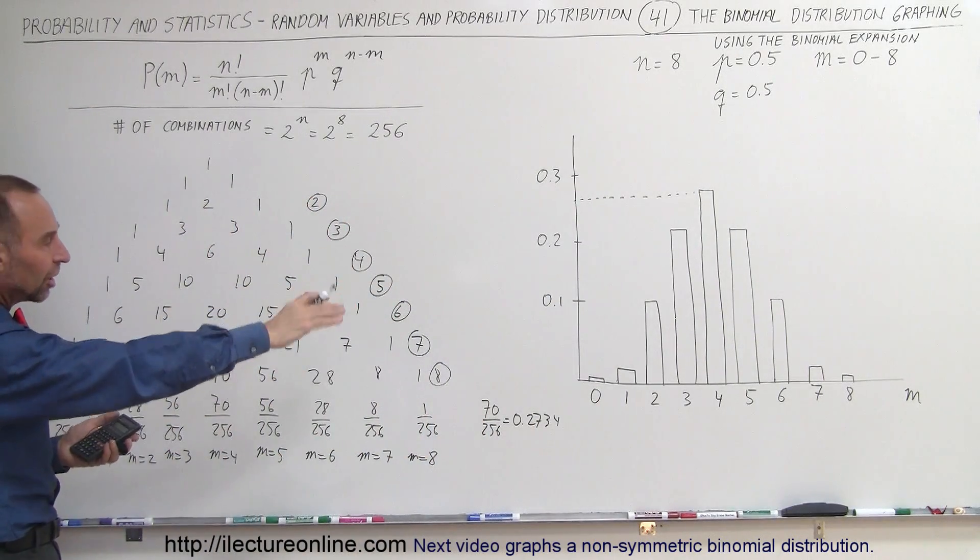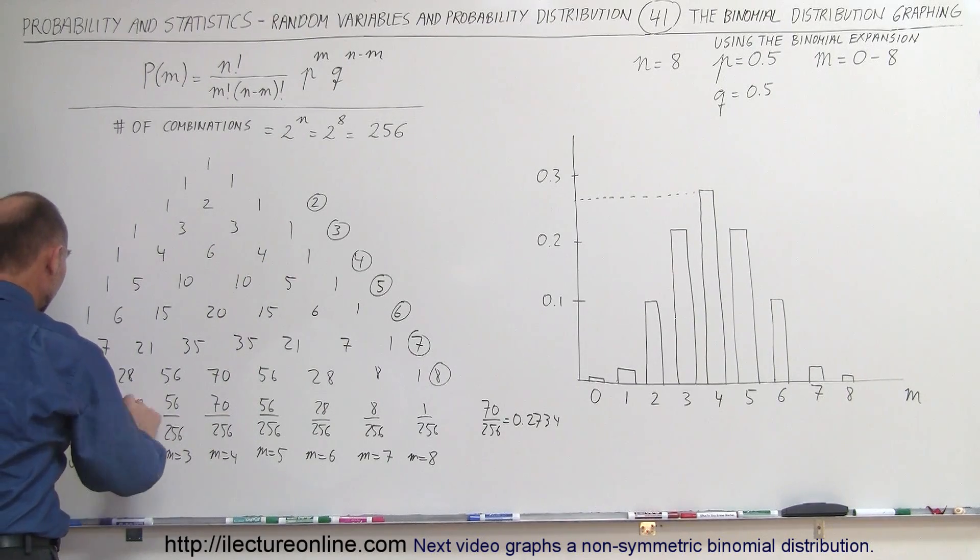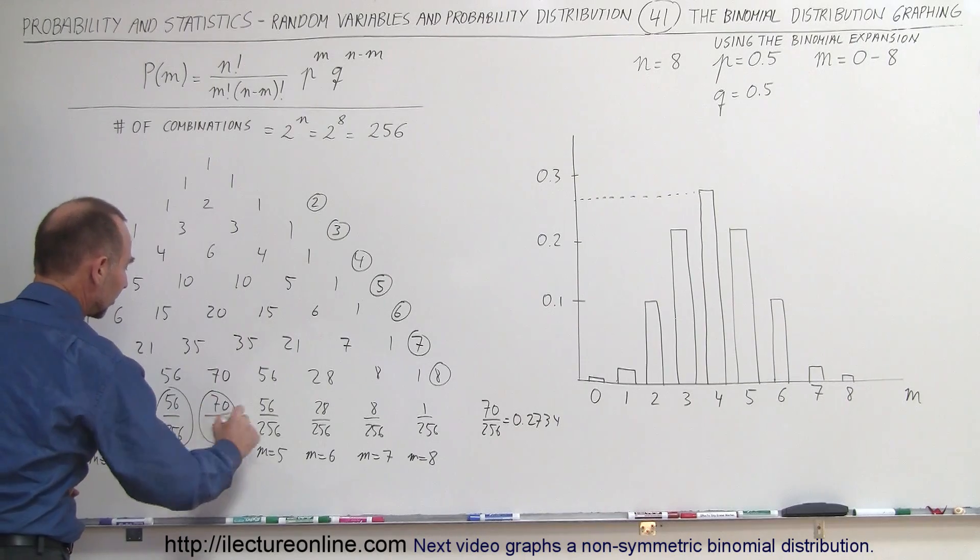And you can see that the heights of each of the columns will correspond to each of these fractions for all the different combinations of successes.